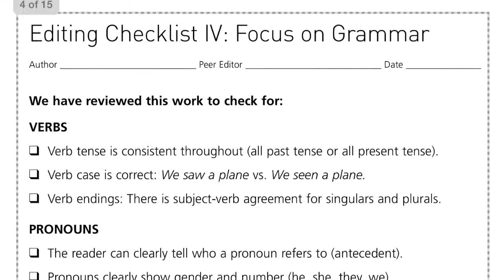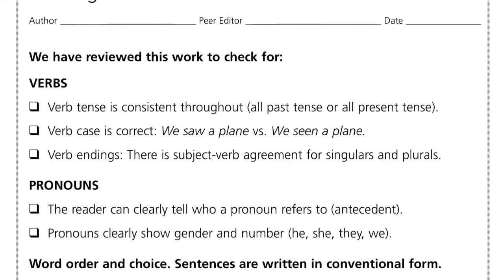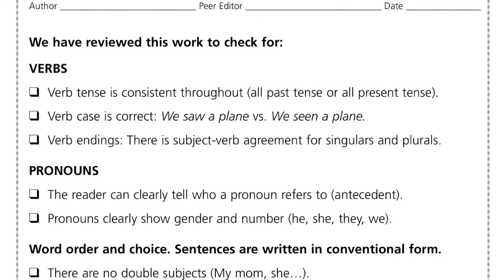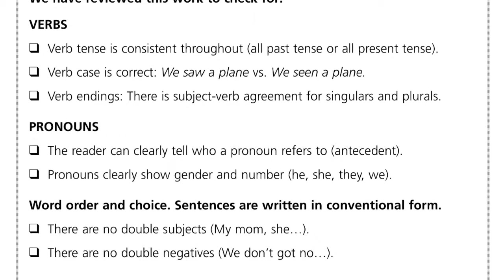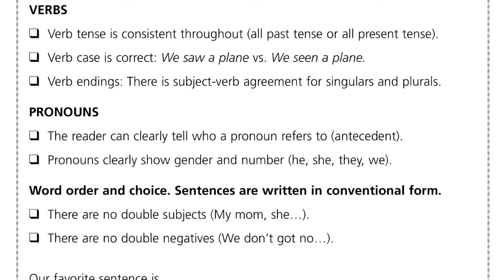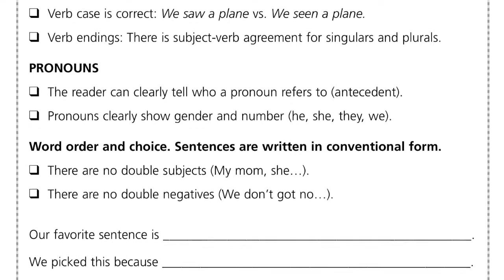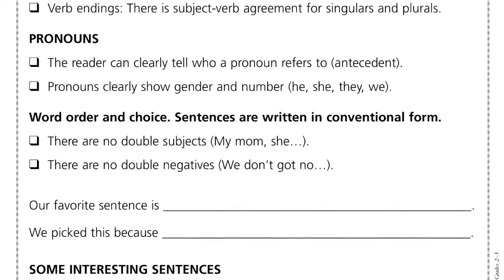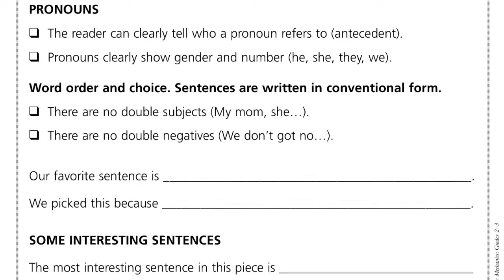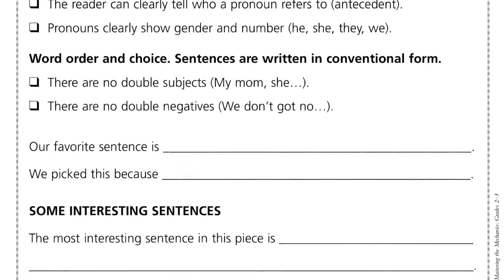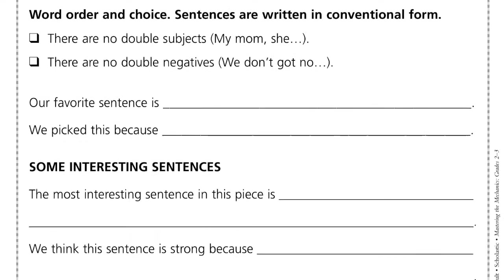Editing checklist number four is a focus on grammar, very carefully checking verbs, pronouns, word order and choice, so the sentences are written in the conventional form, and then our favourite sentences. There's also a space for some interesting sentences to be completed by the editor.